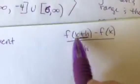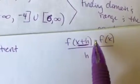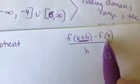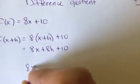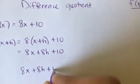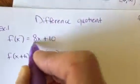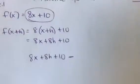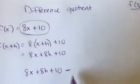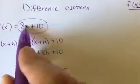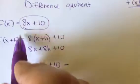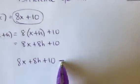Now, in the difference quotient, it wants you to take that and subtract your original function. So I am going to take this, 8x plus 8h plus 10, and subtract all of this. I could put this in parentheses because you're going to subtract it all, which means you would then have to distribute this minus sign.